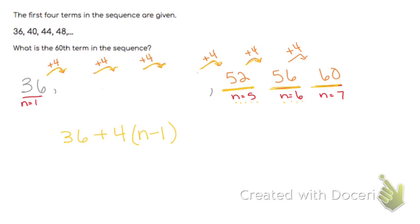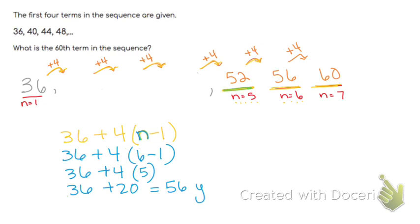Let's test it out. Let's use it to see if we can get 52 as our fifth term. We're going to substitute 5 in for n and see if the answer is 52. Yep, that worked. So let's try it for the sixth term. Let's see if we put 6 in for n if we can get 56. Yep, that works as well. So pretty confident that this is our formula.